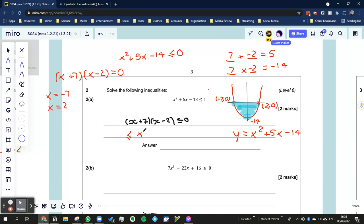x is greater than negative 7 or equal to negative 7 and it's less than or equal to negative oh, not negative, 2. That's how you would do a standard inequality.